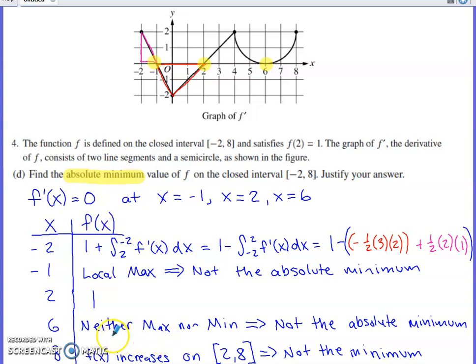Back in part A, we identified 6 as neither a max nor a min. Therefore, there's no way it's the absolute min. If it's not a local min or an endpoint, it cannot be the absolute min.